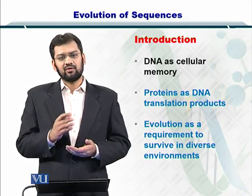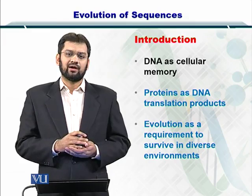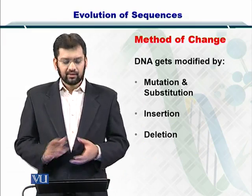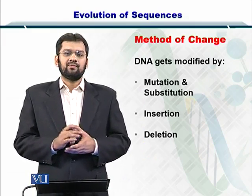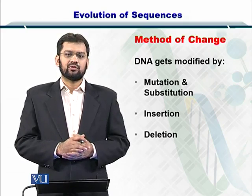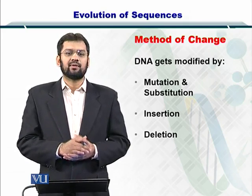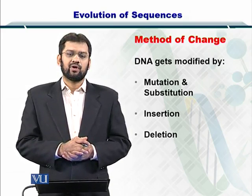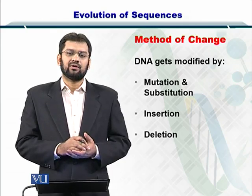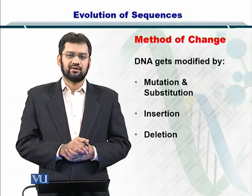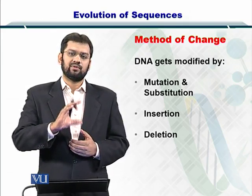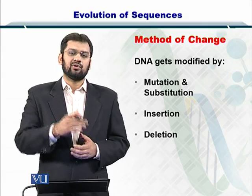The sequence can be of the DNA, the RNA, or the proteins. There are three ways in which the DNA can be modified. The first one is mutation and substitution, wherein one nucleotide is substituted by another or mutates into another. In this way, the DNA sequence is changed, and the proteins translated from the DNA will also be different.